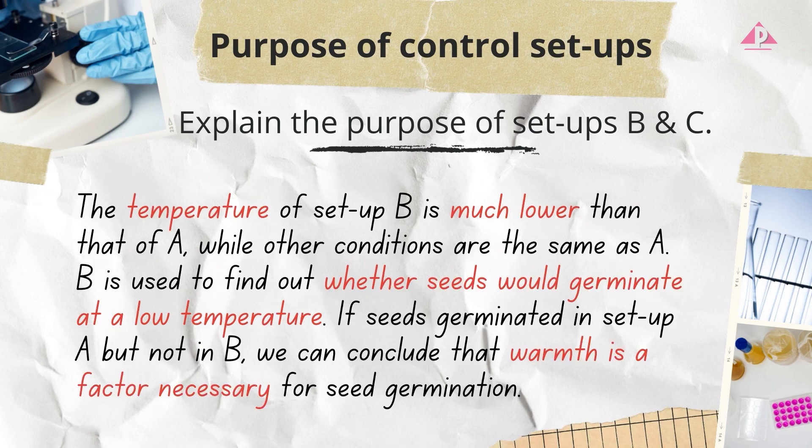To answer the function of setup B, the pattern is similar. The temperature of setup B is much lower than that of A, while other conditions are the same as A. Setup B is used to find out whether seeds would germinate at a low temperature. If seeds germinated in setup A but not in B, we can conclude that warmth is a factor necessary for seed germination.